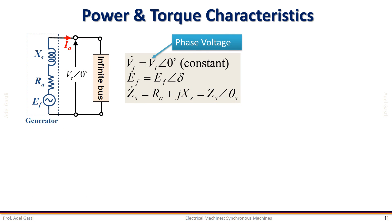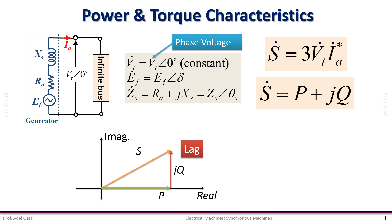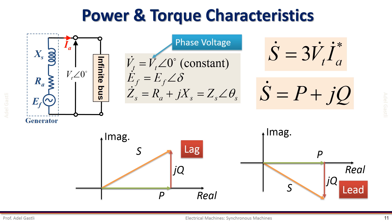Recall that the three-phase apparent power delivered by the generator to an infinite bus is equal to three times the armature phase voltage times the conjugate of the armature current. If you use line voltage and current, we have to use square root of three instead of three. The phasor representation of the apparent power has a real and imaginary component representing the active power and reactive power respectively. This phasor diagram shows the lagging power factor case and this phasor diagram shows the leading power factor case. Note that the conjugate of the current phasor IA is used to conform with the convention that lagging reactive power is positive and leading reactive power is negative.